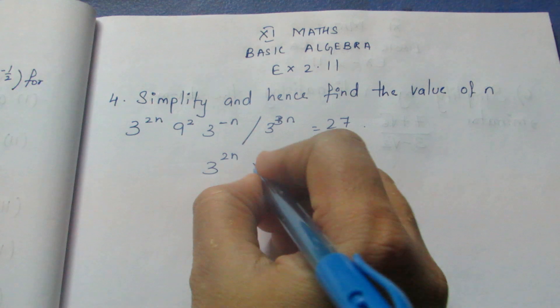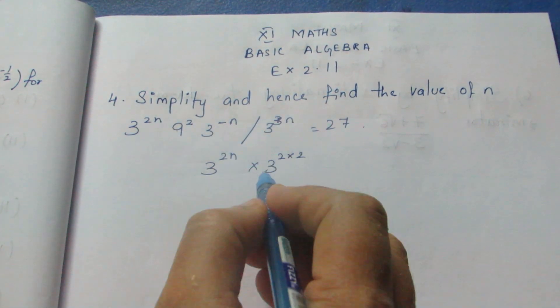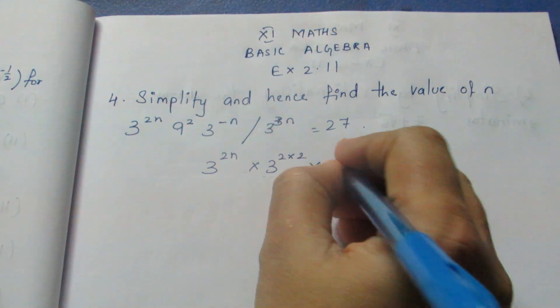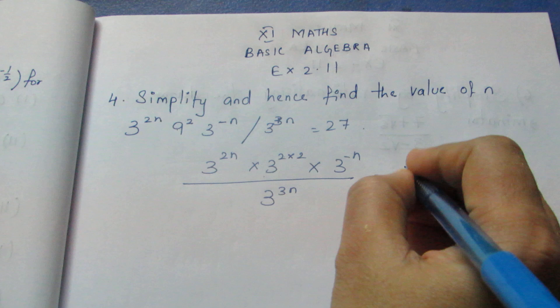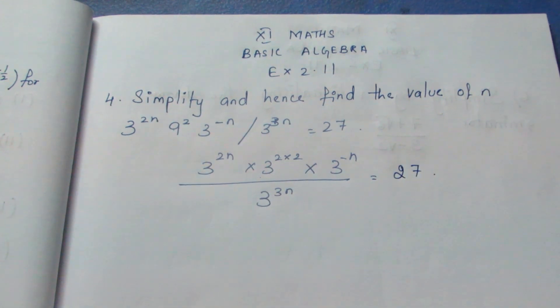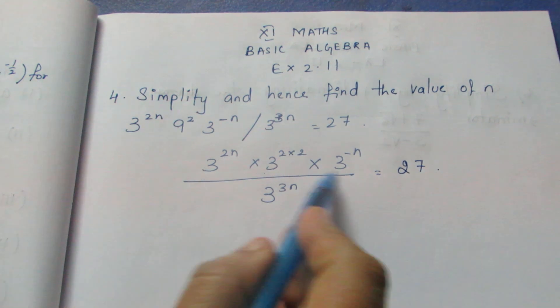9 is also 3 power 2. So this becomes 3 power 4. This will also be 3 power. Now we're simplifying: 3 power 4 into 3 square 2.